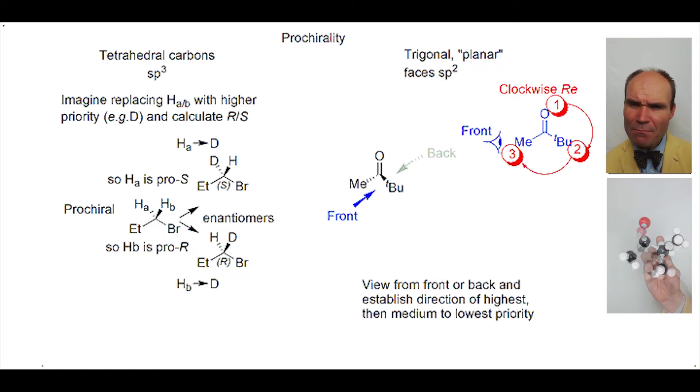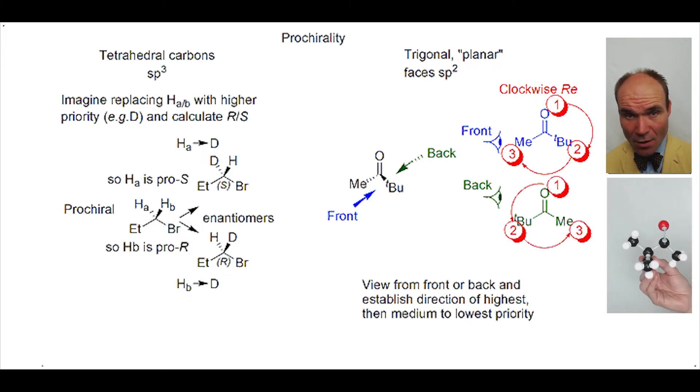What about the backwards direction? Here is what we see. Notice the methyl and the T-butyl groups are in the opposite locations. If we follow the priorities around from highest through ultimately to lowest, this time the movement is anticlockwise. The back face is described as Si.